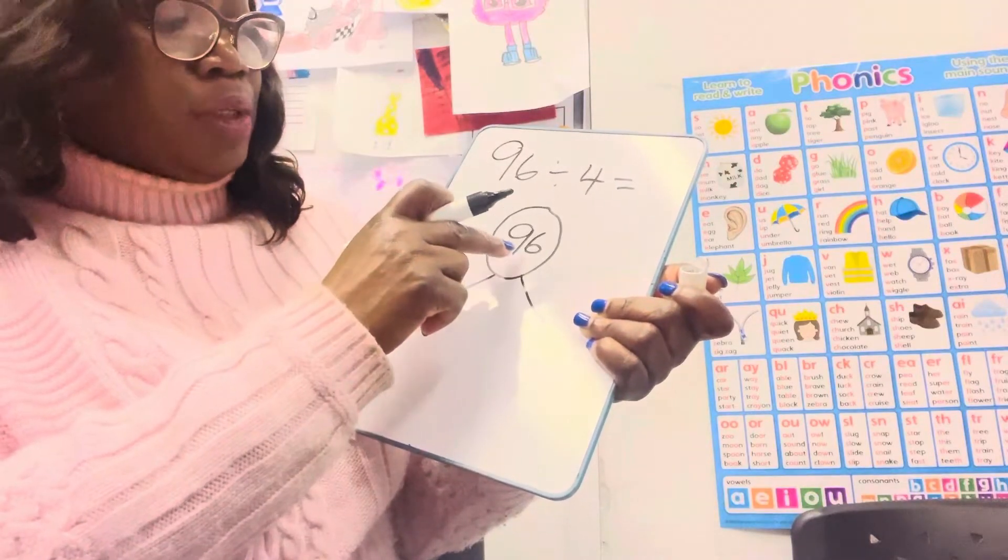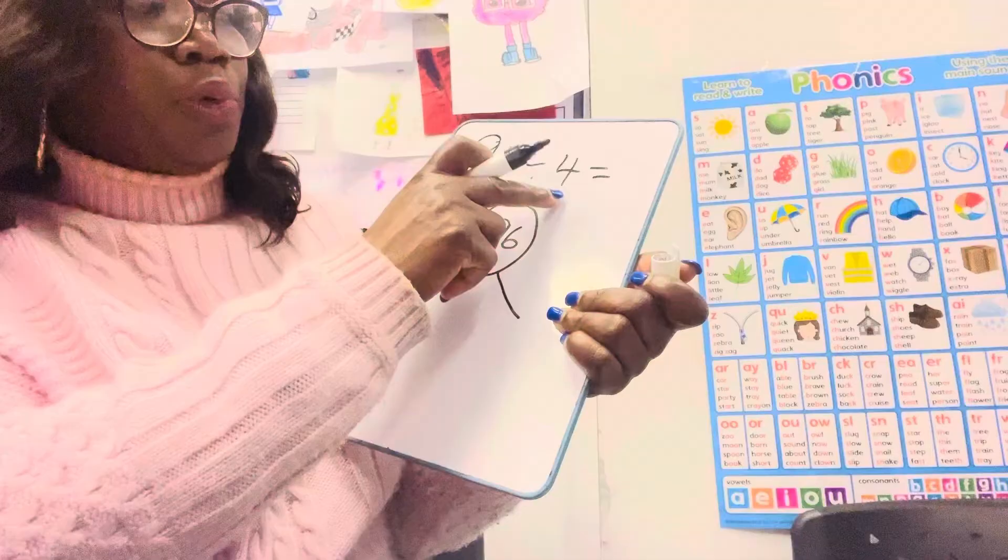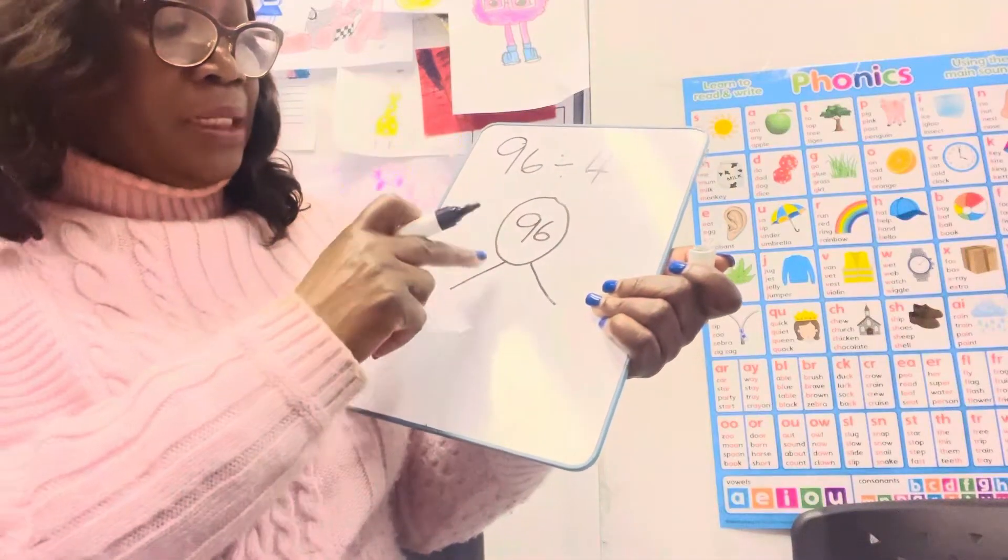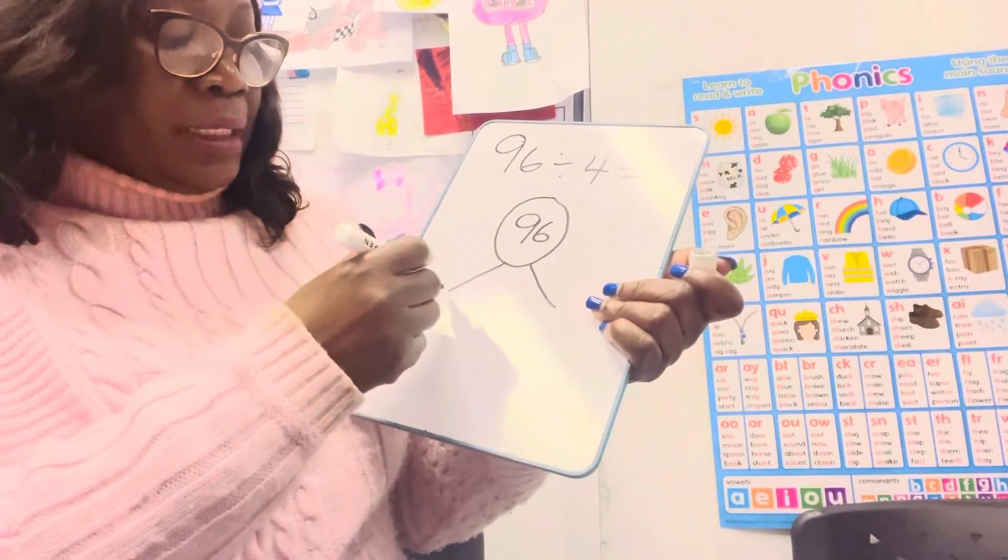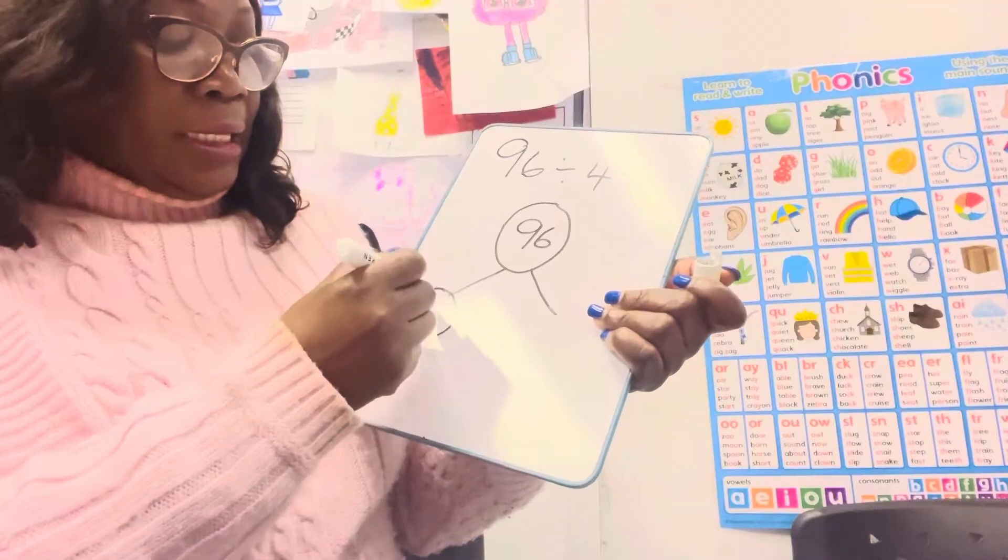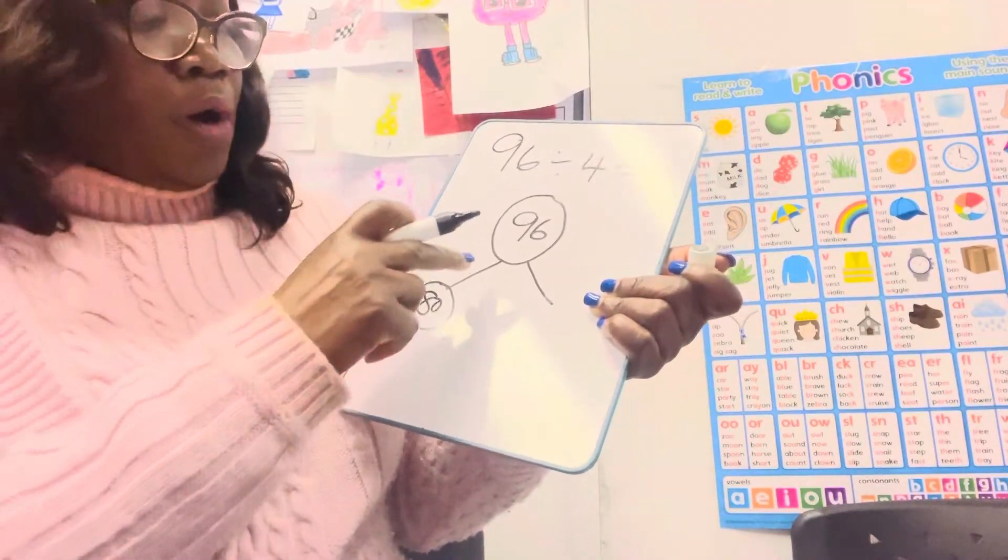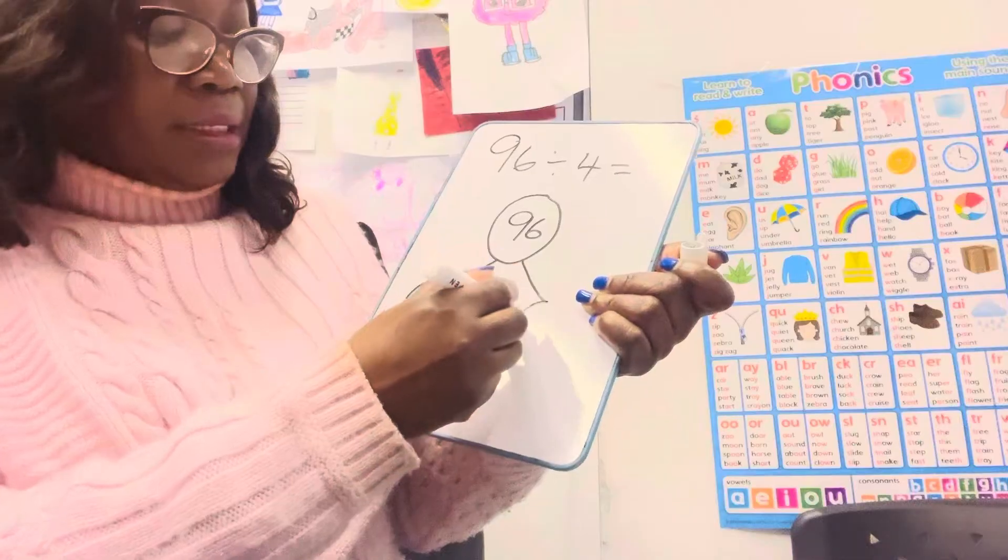For example, we could use 80. We know 80 is a multiple of 4, and 80 add 16 makes 96. And we write 16 here.